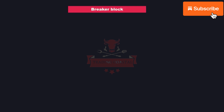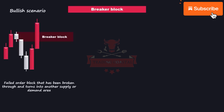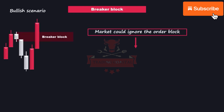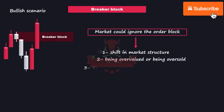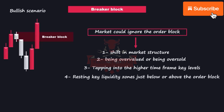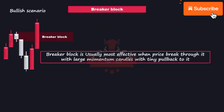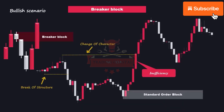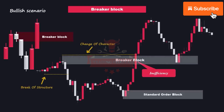Let's see the next order block type: the breaker block. A breaker block is a failed order block that has been broken through and turned into another supply or demand area on the chart. The market could ignore an order block for many reasons, including a shift in market structure, being overvalued or oversold, tapping into higher time frame key levels, or resting key liquidity zones just below or above the order block. When a valid order block fails to reject the price and price breaks through it, it becomes a supply or demand level — which we call a breaker block. Breaker blocks are usually most effective when price breaks through with large momentum candles and a tiny pullback. In the example, price pushed to the upside and broke through the order block with large momentum candles, leaving great inefficiency behind. Price eventually pushed back down to fill the inefficiency, and after mitigation of the breaker block, sharply pushed to the upside. Price also ignored the standard order block located at the extreme.